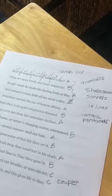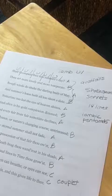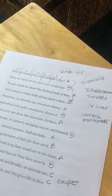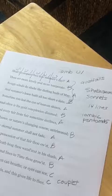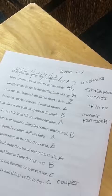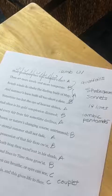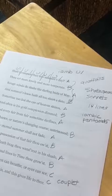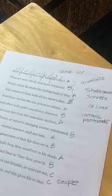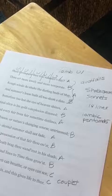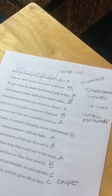Shall I compare thee to a summer's day? Thou art more lovely and more temperate. Rough winds do shake the darling buds of May, and summer's lease hath all too short a date. Sometime too hot the eye of heaven shines, and often is his gold complexion dimmed, and every fair from fair sometime declines, by chance or nature's changing course untrimmed. But thy eternal summer shall not fade, nor lose possession of that fair thou oast, nor shall death brag thou wanderest in his shade, when in eternal times to lines to time now growest. So long as men can breathe, our eyes can see, so long lives this, and this gives life to thee.